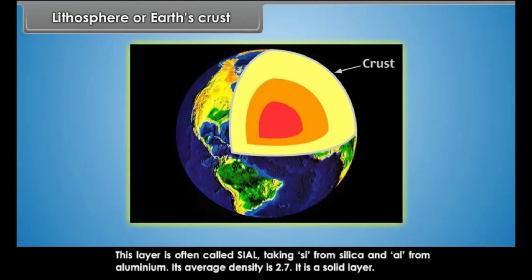This layer is rich in silica and aluminum, and is often called SIAL — SI from silica and AL from aluminum. Its average density is 2.7, and it is a solid layer.